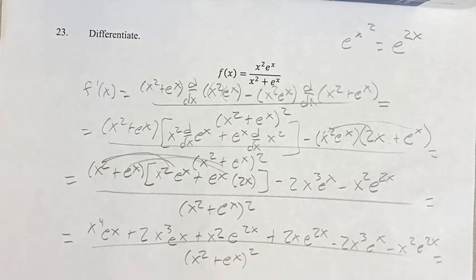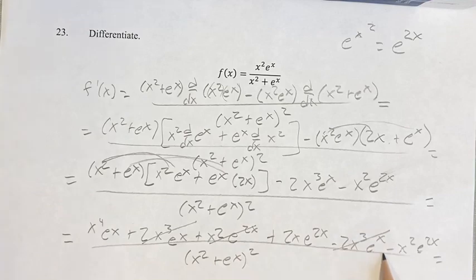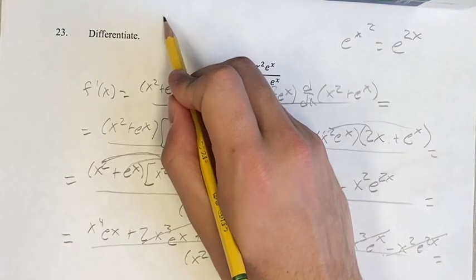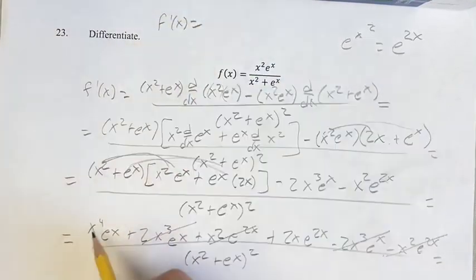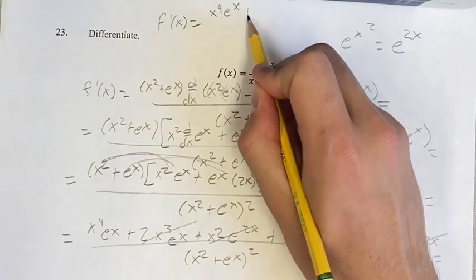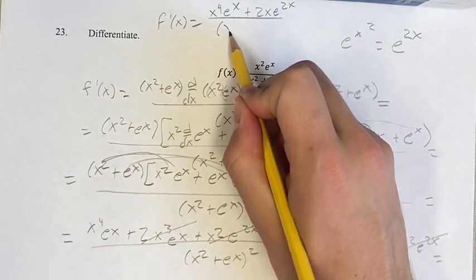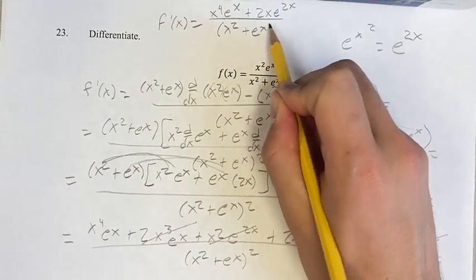Our last step is combining like terms. We have 2x cubed e to the x minus 2x cubed e to the x — those cancel. And we have x squared e to the 2x minus x squared e to the 2x — those cancel too. So this leaves us with the derivative equal to x to the 4th e to the x plus 2x e to the 2x, over x squared plus e to the x, squared.